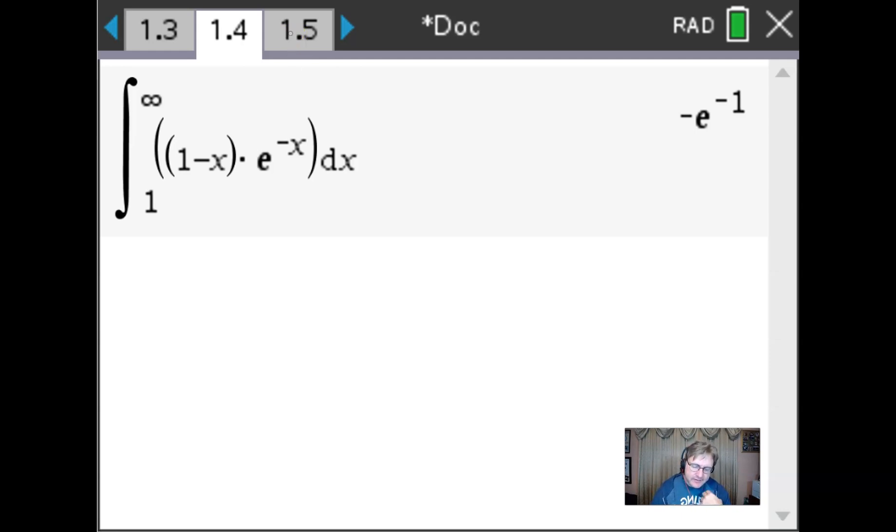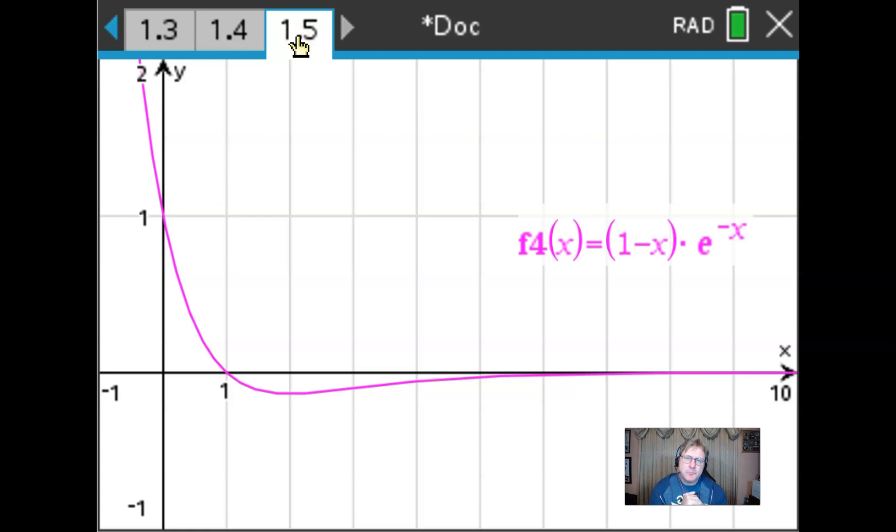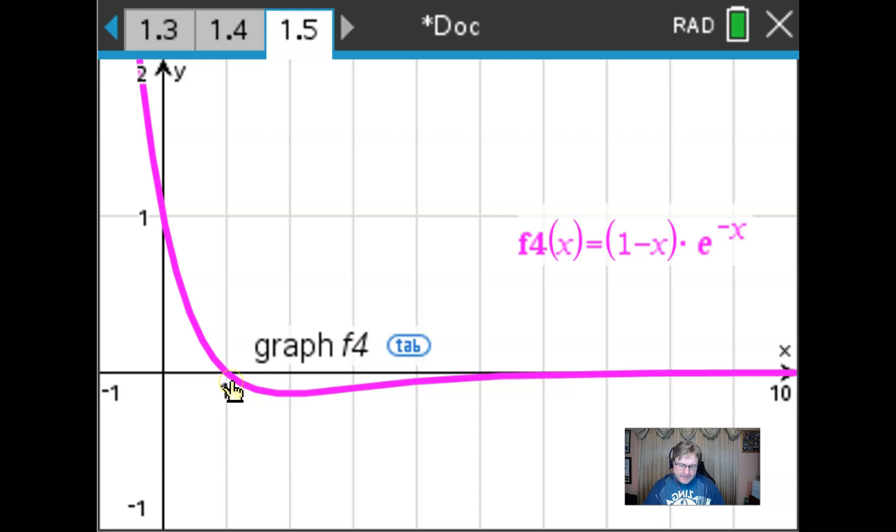If you want to take a look graphically at what's happening, one thing that's important to note is that we did get this negative result for what would be construed as the area between the curve and the x-axis. And lo and behold, if you do graph this and look from 1 to infinity, we seem to have some space that's all below the x-axis. So I like the fact that we got a negative result. It's verified graphically.